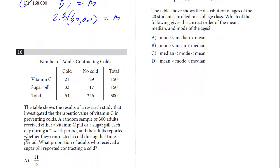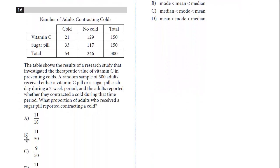Let's take a look at question number 16. The table shows results of a research study that investigated the therapeutic value of vitamin C in preventing colds. A random sample of 300 adults received either a vitamin C pill or sugar pill during a two-week period. The adults reported whether they contracted a cold during that time period. What proportion of adults who received a sugar pill reported contracting a cold?